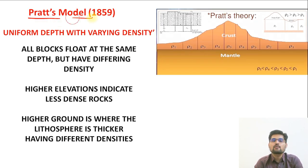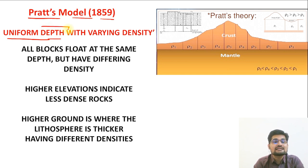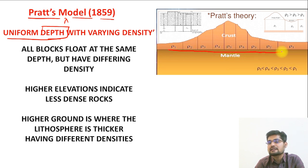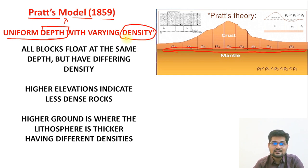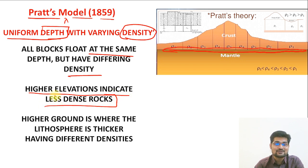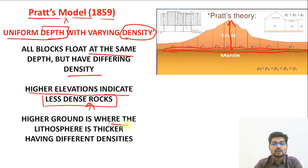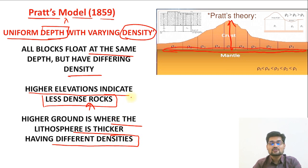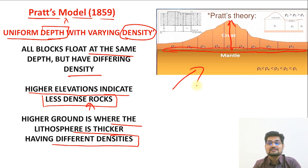The second model is Pratt's theory of 1859, which is the opposite of Airy's. Pratt said that uniformity is in depth rather than density. Every material on the surface of the earth has the same depth, but what varies is their density. All the blocks float at the same depth but have different densities. Higher elevations indicate less dense rock. So higher ground is where the lithosphere is thicker with different densities. Airy has uniformity in density; Pratt has uniformity in depth.